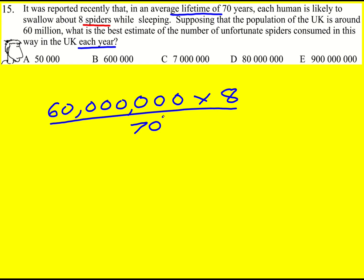Okay, we can cancel out the zero and the zero. Six and eight times together give 48, so that becomes 48 million. 48 million divided by seven is approximately 49 million divided by seven.